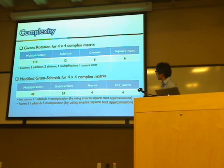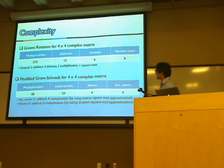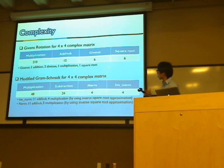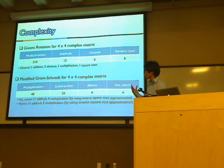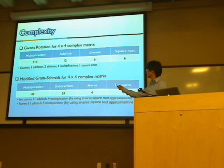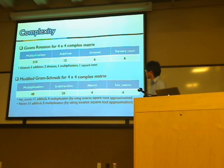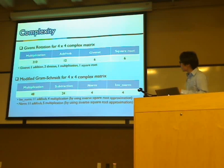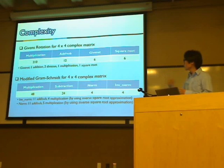There are 4 norm and inverse norm operations. Using an inverse norm approximation, we can implement these with only 11 additions/subtractions and 4 multipliers. Based on the lower complexity and better scalability, we selected the modified Gram-Schmidt algorithm to implement the QR decomposition.